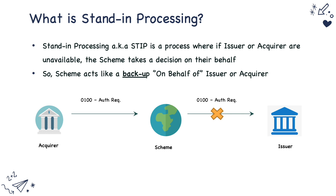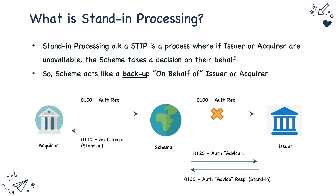Let's look at an example. Say an acquirer initiates an authorization request and forwards it to the scheme, and the scheme for some reason is not able to reach the issuer. Then the scheme sends a response on behalf of the issuer — a 110 message. Once the issuer is up and running, the scheme issues a 120 authorization advice and receives a 130 authorization advice response.